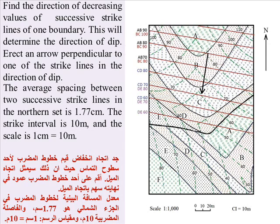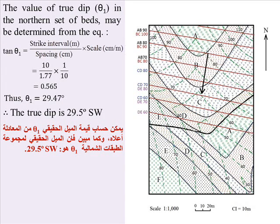The average spacing between two successive strike lines in the northern set is 1.77 centimeters. The strike interval is 10 meters and the scale is 1 centimeter equals 10 meters. The true dip θ₁ of the northern set is determined from: tan θ₁ = strike interval / (spacing × scale). By substitution: 10 / (1.77 × (1/10)) = 0.565, thus θ₁ = 29.47°.